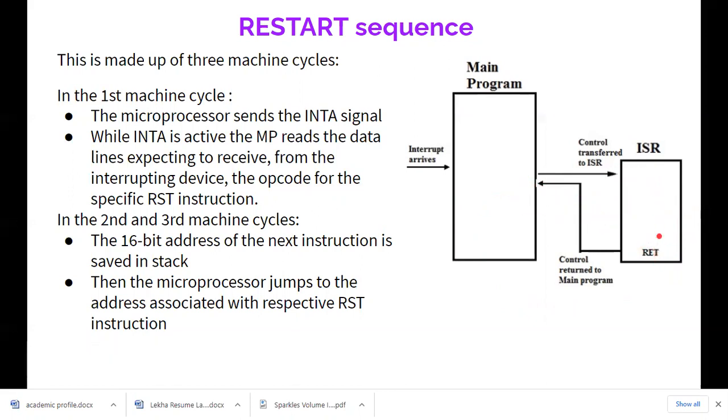Then here it returns to the main program after it completes that. Before that it enables the interrupt flip-flops and the control returns to the main program, and from there where it has been disturbed it stops executing. This is what the restart sequence will do. Now an RST will consist of three machine cycles.